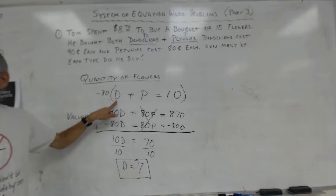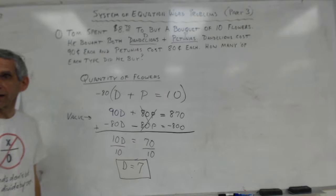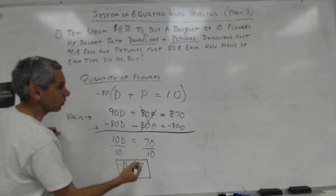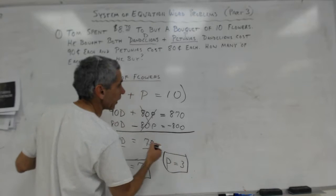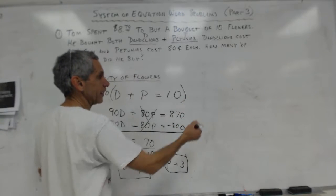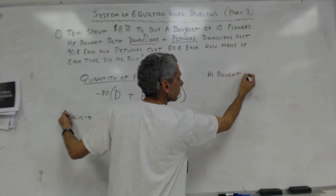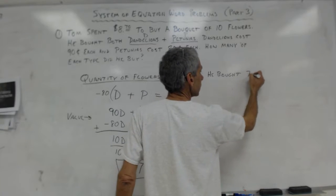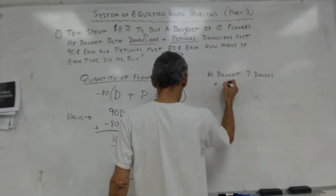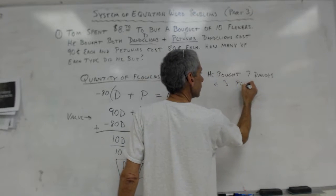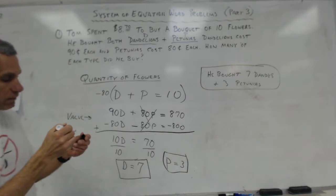And so now I just go up here. If he bought seven dandelions and he bought a total of ten flowers, how many petunias did he buy? Three. So I know the petunias were three. And then I should write the answer in words. He bought seven dandelions and three petunias. And then I put it in a box so the teacher can find it, and I'm done.